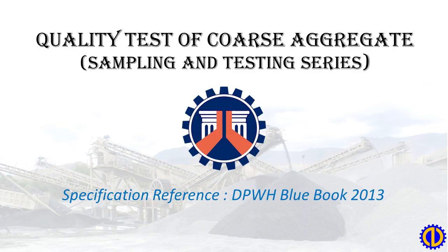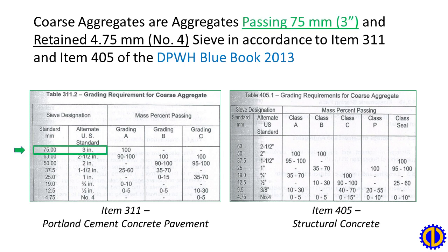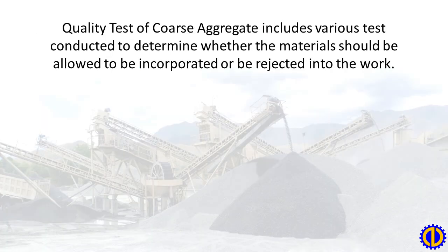Quality test of coarse aggregate — sampling and testing series. Specification reference: DPWH Blue Book 2013, Part 1. Introduction: coarse aggregates are aggregates passing 75 millimeters (3-inch) and retained on 4.75 millimeters (No. 4) sieve, in accordance with Item 311 and Item 405 of the DPWH Blue Book 2013. Quality tests of coarse aggregate include various tests conducted to determine whether the materials should be allowed to be incorporated or rejected into the work.